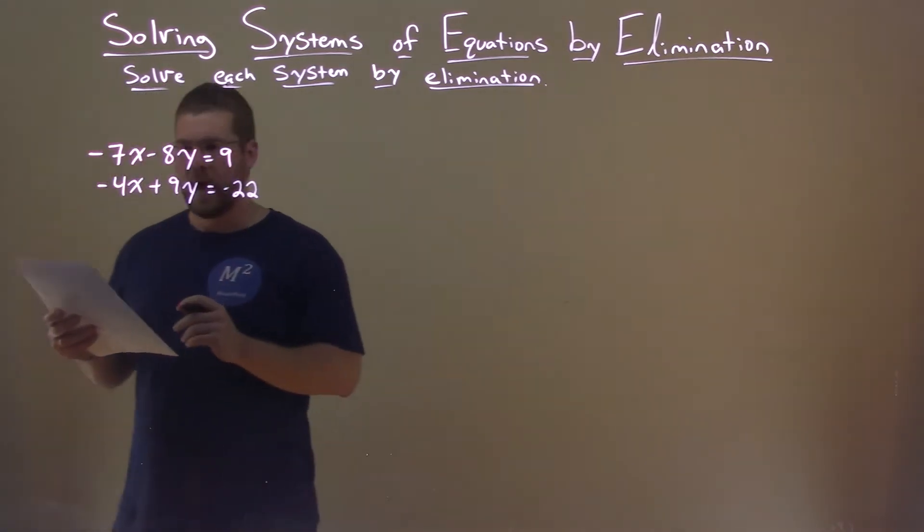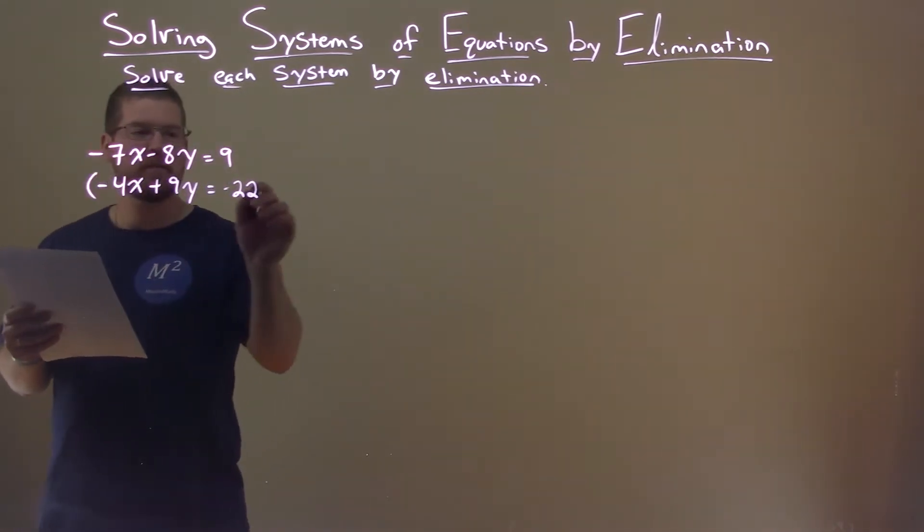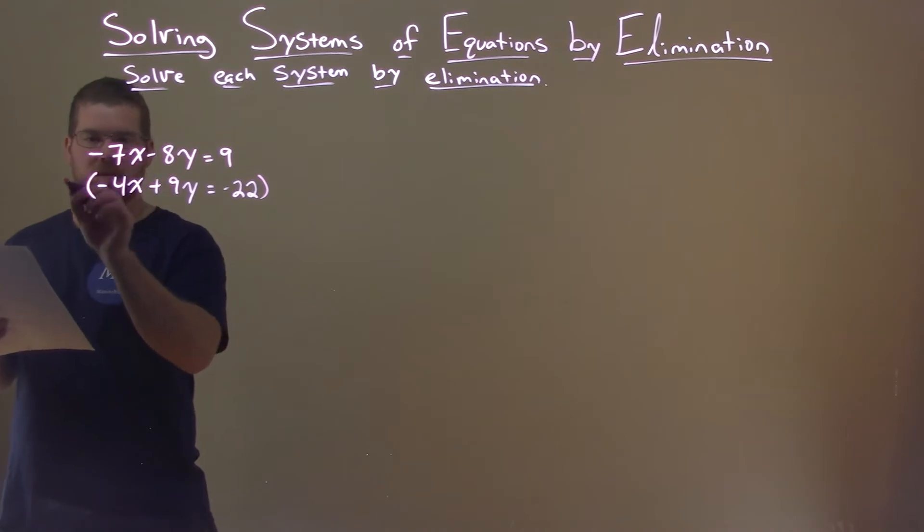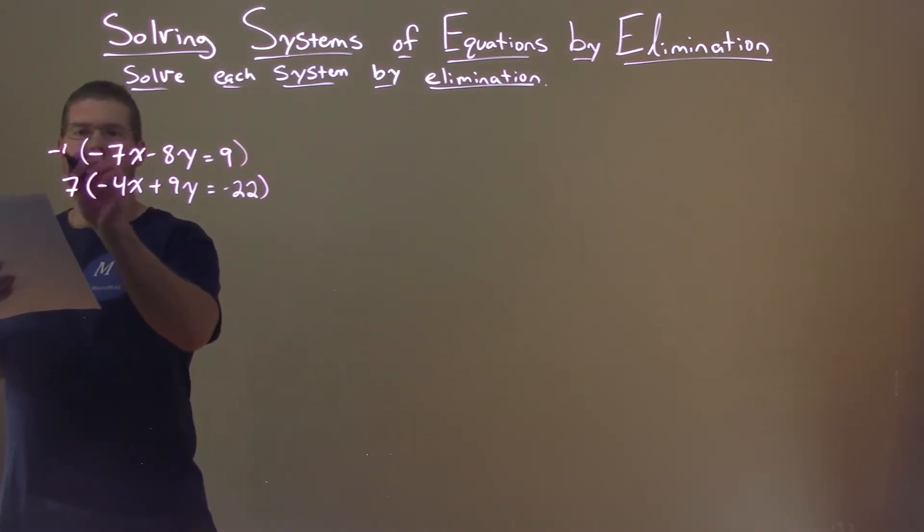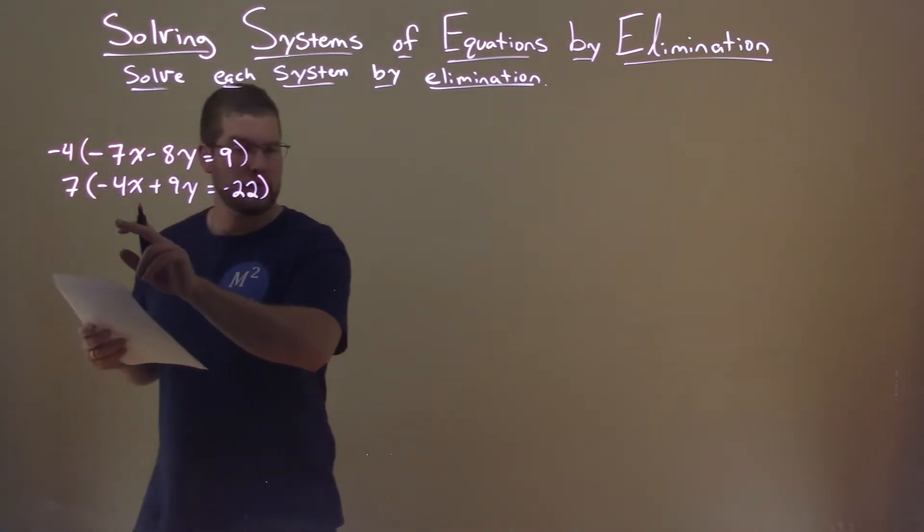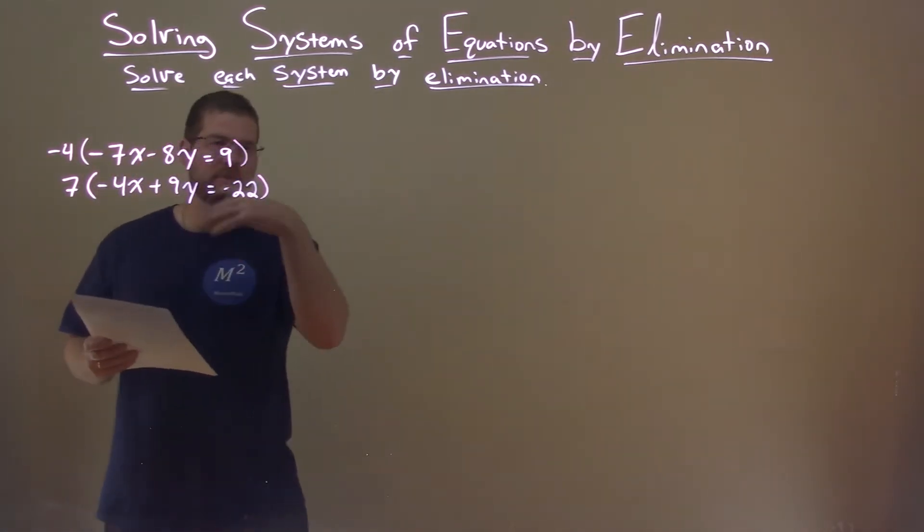My goal is I'm going to eliminate the x. To do that, I'm going to multiply the second equation by a positive 7, and the top equation by a negative 4. We're going to make sure we have at least one of these equations negative, one positive of the x-value, so when we add them, they eliminate.